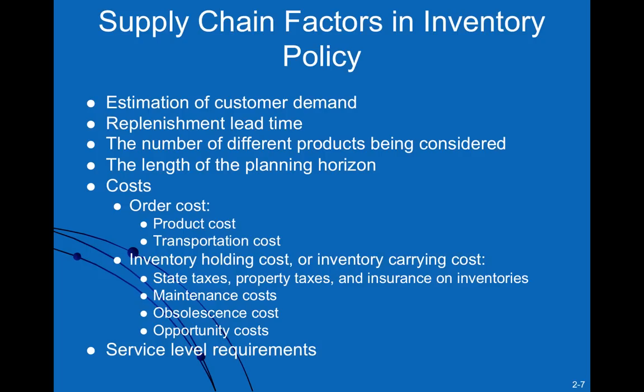To make those decisions, we need critical information. We need to know customer demand — if customer demand is large we will typically place larger orders; if demand is small we'll place smaller orders. We also need to know the replenishment lead time: how long does it actually take to get the product? If the lead time is short — say one day — you only need one day of supply to tide you over while waiting for the shipment. If it is two weeks, you need two weeks of supply, so the reorder point would be much larger with a longer lead time.